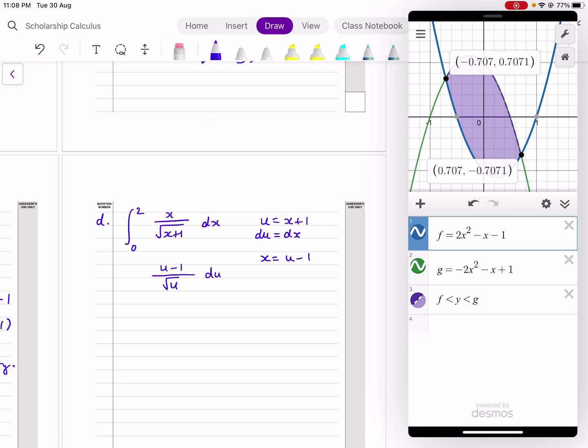When x is equal to 0, u is equal to 1. When x is equal to 2, u is equal to 3. So my limits become 1 and 3. You don't have to change the limits, but because we're integrating with respect to u, it makes sense to make those u values. Then we can simplify this now. Because I've turned the denominator into a single term, I can now do the division. u divided by root u is u to the half. 1 divided by root u is equal to minus u to the negative 1 half.